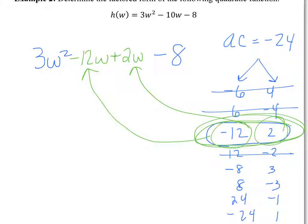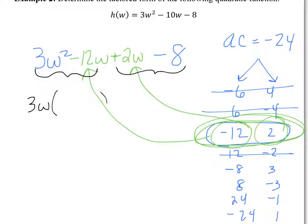Look at the form it's in — this is perfect grouping form. Think back to yesterday's lesson on grouping. Look at the first two together, then look at the next two together, and use grouping. What's the GCF of the first two terms, 3W squared minus 12W? 3W. How do I know? 3 is here, 12 is 4 times 3 so there's definitely a 3 in there. W is here, and there's at least one W over here, so we can take out W.